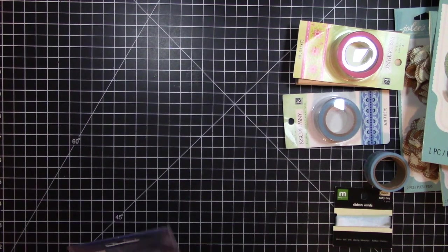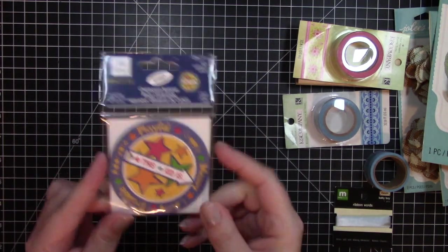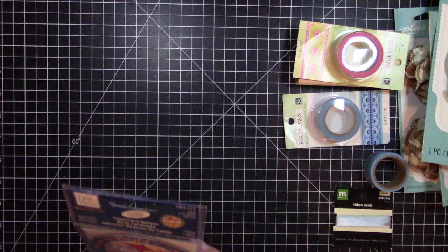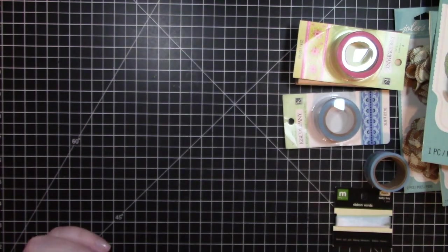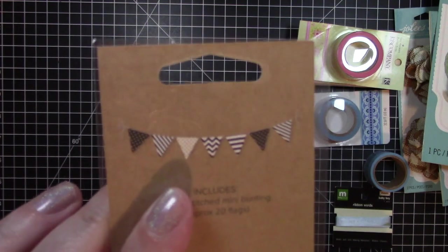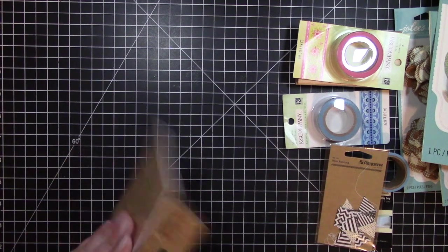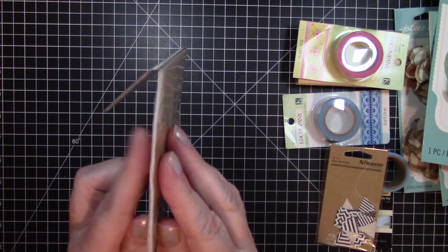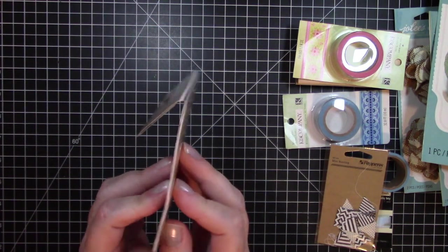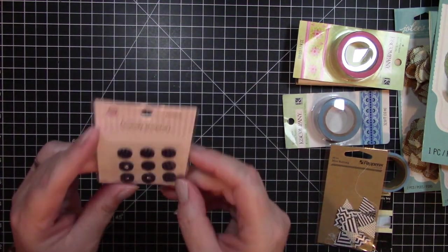We have this cute little spinner, chipboard spinner. It would be great for a card or a scrapbook page. It's a kid sticker. This is called Mini Bunting. I could definitely use these. 3D foam tape. They're not the super thick kind. They're great. I like the thinner ones for cards.